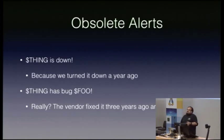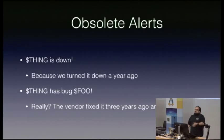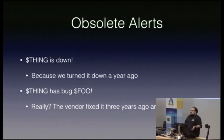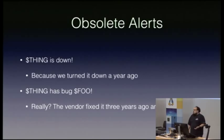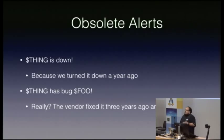Your alerting configuration should already be in a revision control system of some kind — Subversion, RCS, Git, CVS — it doesn't really matter, as long as you have that ability to know you have the history and you can always revert, always pull back if you ever need to. Delete, worry about it later.